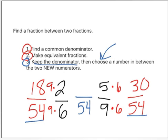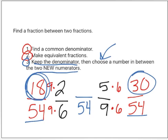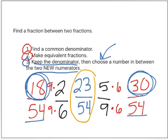Now I get to choose a number between my two new numerators. So I'm going to choose a number between eighteen and thirty. I'm going to choose twenty-three. My fraction in between is twenty-three fifty-fourths.